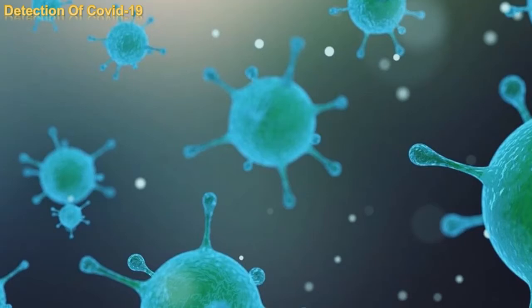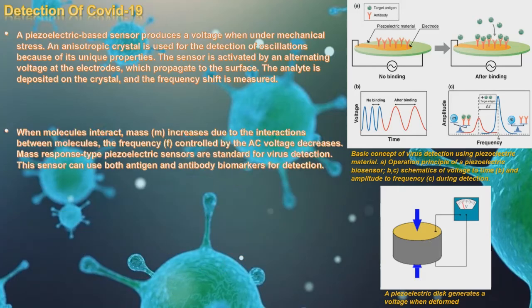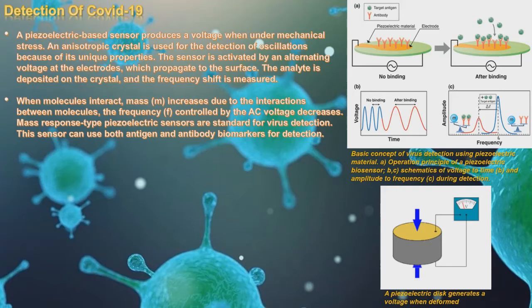A piezoelectric-based sensor produces a voltage when under mechanical stress. An anisotropic crystal is used for the detection of oscillations. The sensor is activated by an alternating voltage at the electrode, which propagates to the surface. The analyte is deposited on the crystal and frequency shift is measured. When molecules interact, mass increases and the frequency controlled by the AC voltage decreases. Mass-response-type piezoelectric sensors are standard for virus detection and can use both antigen and antibody biomarkers.